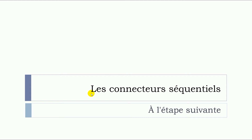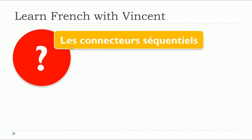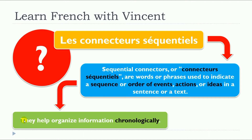In this lesson, we will see together les connecteurs séquentiels, but more precisely, we will see à l'étape suivante. Sequential connectors, or connecteurs séquentiels, are words or phrases used to indicate a sequence or order of events, actions, or ideas in a sentence or a text. The idea is that they help organize information chronologically.